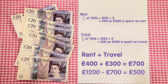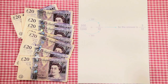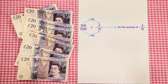The fraction needs to be simplified by dividing the top and bottom by the greatest common factor. This is the largest number that can be directly divided into these two numbers. In this case, the greatest common factor is 100. So 500 divided by 100 is 5, and £1,200 divided by 100 is 12. Therefore, the answer is 5 twelfths, which is written as 5 over 12.